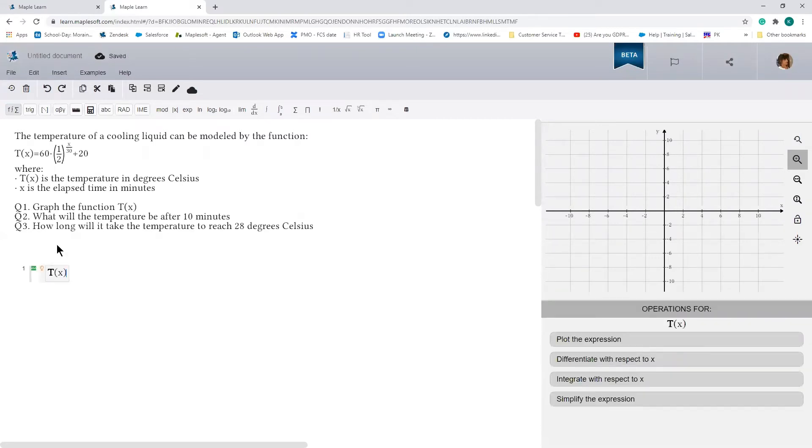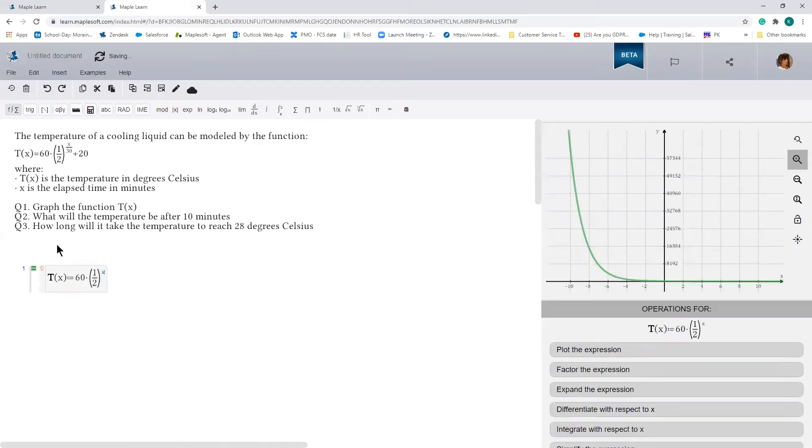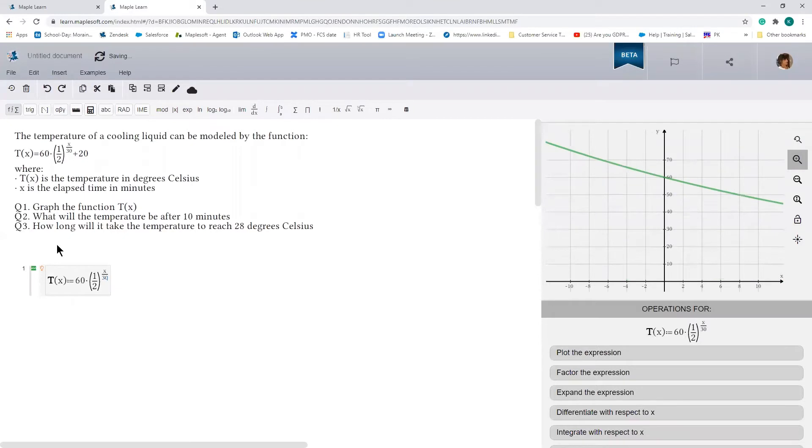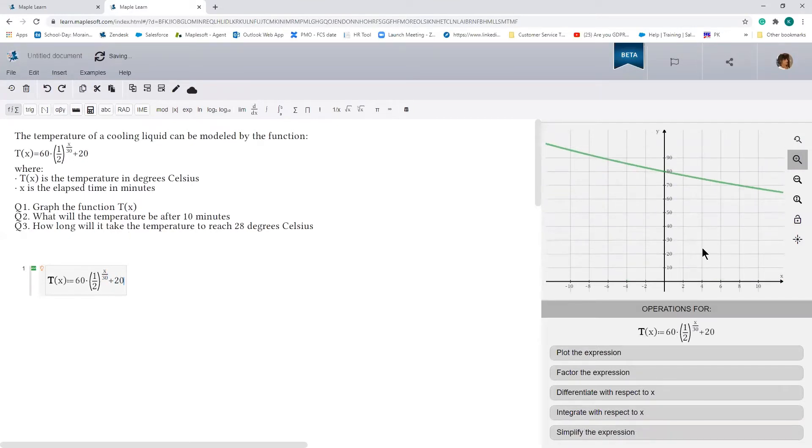t of x equals 60 times 1 half raised to the power of x over 30 plus 20. You'll notice the plot right here in the plot window. And now we can use the plot toolbar icon to get a better view of the exponential feature of this function.